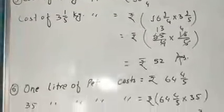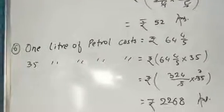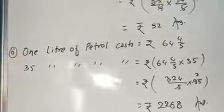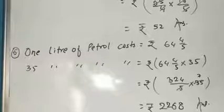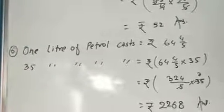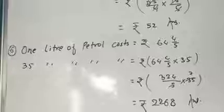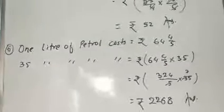Question number six: one liter of petrol costs rupees 64 and 4 by 5. What is the cost of 35 liters of petrol? Simply here we'll multiply, and the answer will be 2268.